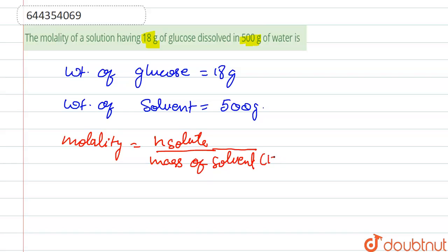So after solving this, the weight of solute is given, that is 18 grams, and the molecular weight of glucose is 180.